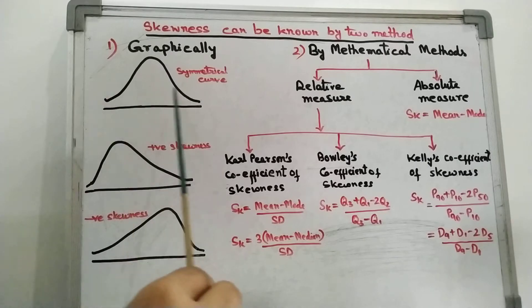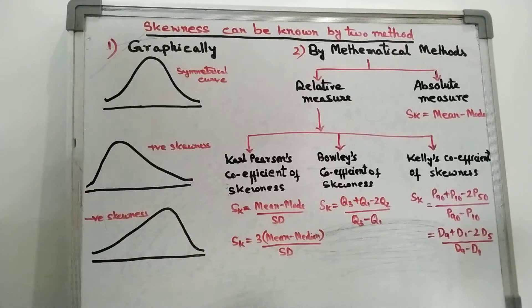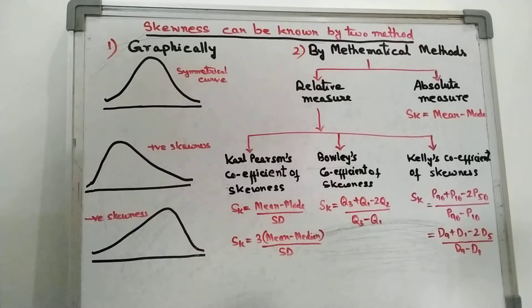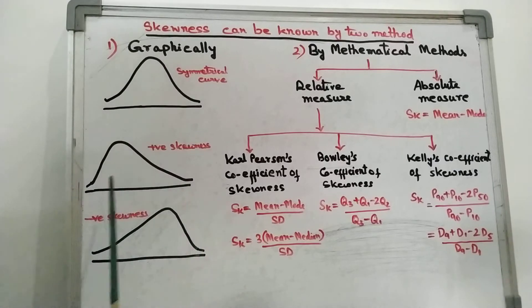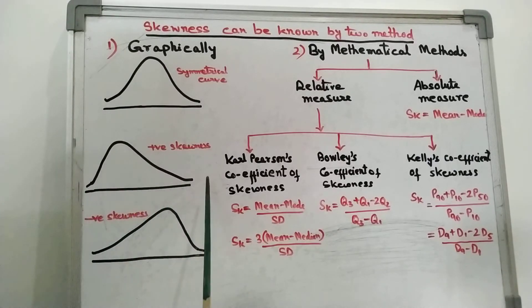These are the two tails of the curve. By naked eyes, check whether the tails of the curve are symmetrical or not. If not symmetrical, the curve is skewed. Positive skewness depends on whether the right tail is more elongated than the left tail. Here this tail is more elongated than the left tail, so it is positively skewed.